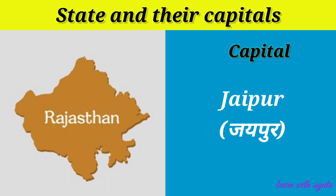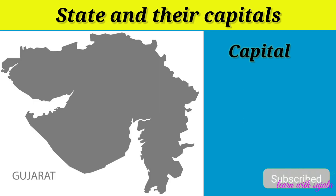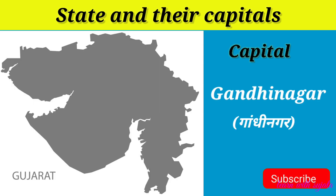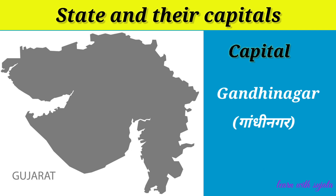Rajasthan. The capital of Rajasthan is Jaipur. Maharashtra. The capital of Maharashtra is Mumbai. Gujarat. The capital of Gujarat is Gandhinagar.